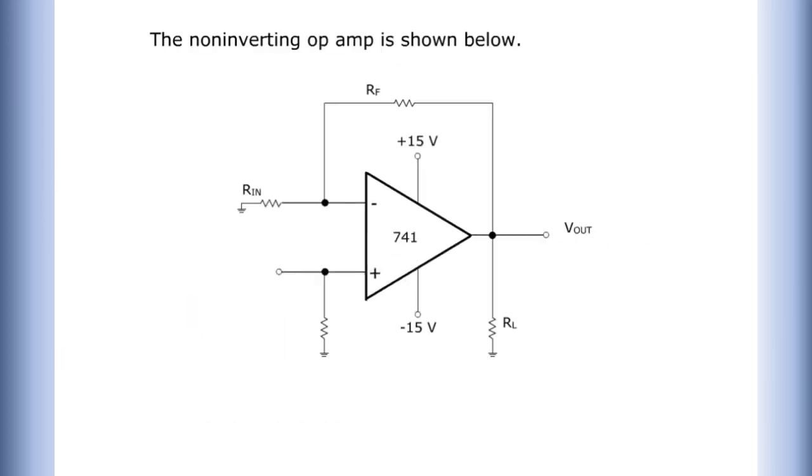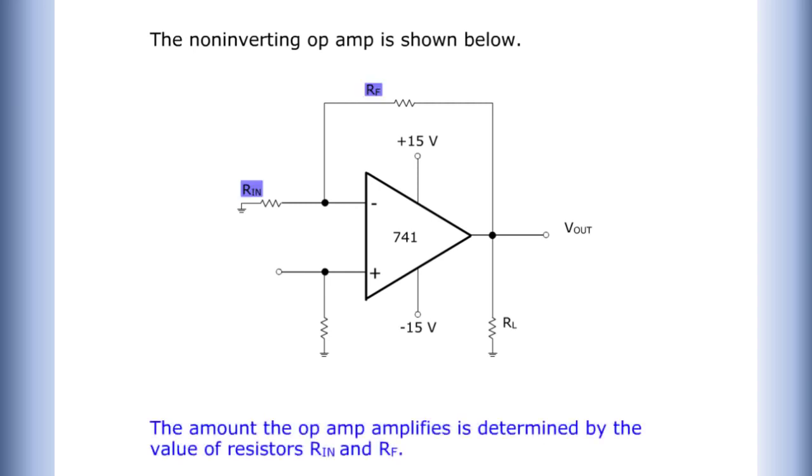The non-inverting op-amp is shown below. The input signal is applied to the non-inverting lead. The amount the op-amp amplifies is determined by the value of resistors, input, and frequency.